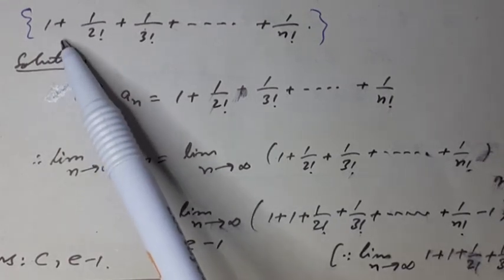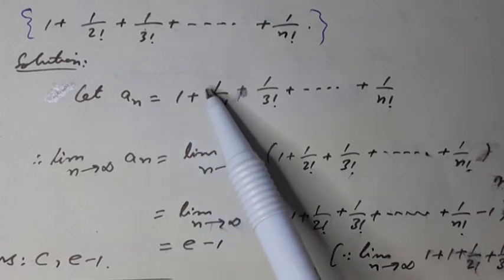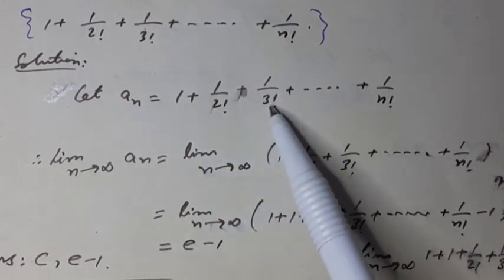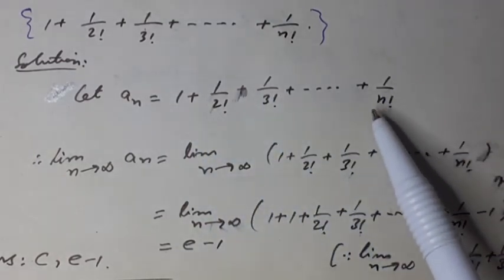Let nth term of the given sequence an equals 1 plus 1 over 2 factorial plus 1 over 3 factorial plus so on plus 1 over n factorial.